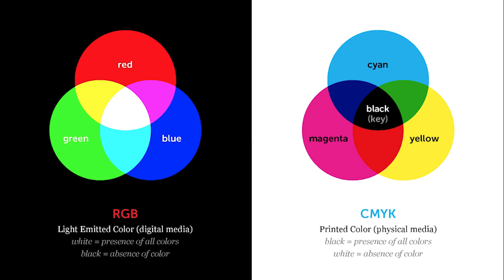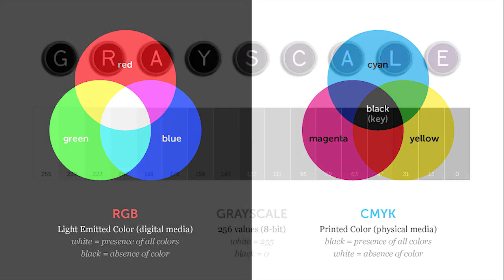RGB is a much better color mode otherwise. It only has three color channels, takes less memory, and it has a much wider color spectrum — almost as wide as your eyes can see. CMYK has a much more limited color spectrum.